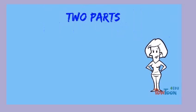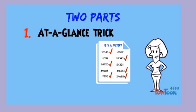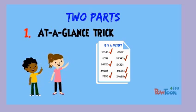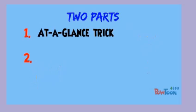Now it's time for you to practice! There are two parts to the work. First, look at the numbers on the worksheet your teacher gives you and quickly put a check mark beside each number that has 5 as a factor. Hands up to show your teacher when you have finished this step. When your teacher has checked your at-a-glance work, go ahead and divide by 5.